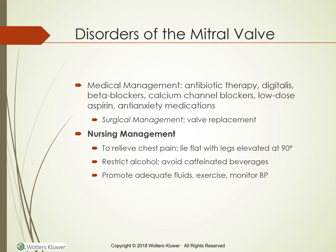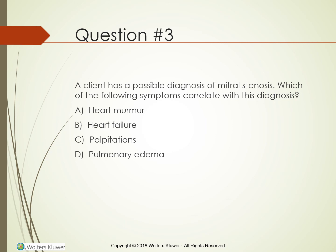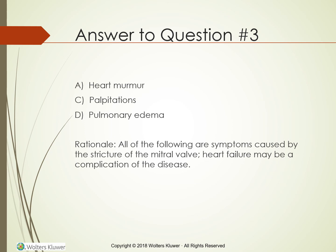Question: a client has a possible diagnosis of mitral stenosis. Which of the following symptoms correlate with this diagnosis — heart murmur, heart failure, palpitations, or pulmonary edema? The answer includes three: heart murmurs, palpitations, and pulmonary edema. All three are symptoms caused by the stricture (narrowing) of the mitral valve. Heart failure may be a complication of the disease, but is not a direct symptom.